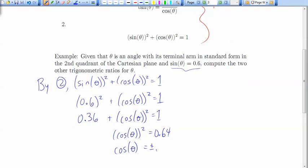And now we can take the positive and negative square root. Well the root of 0.64 turns out that's 0.8. Now, this is where the second quadrant comes into play. In the second quadrant, if we have a terminal arm there, we get that the cosine ratio, we think of the cast rule, is negative.